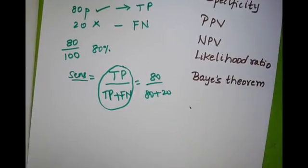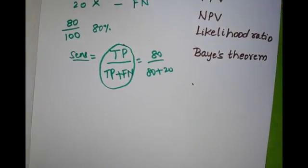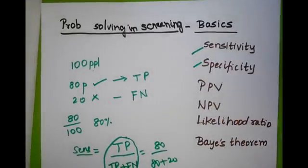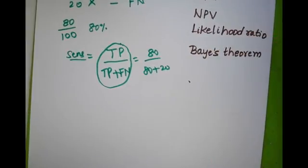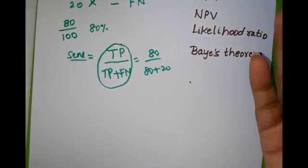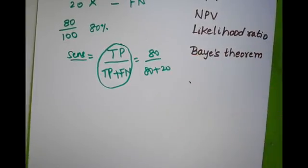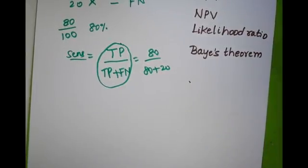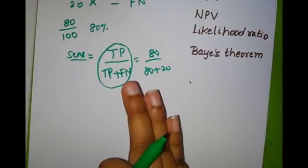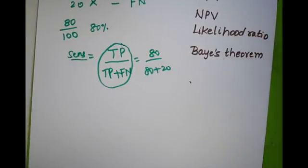Sensitivity and specificity are two fixed parameters for any test. They are not suddenly going to change when prevalence increases or when the diseased population increases or decreases. For example, if your sphygmomanometer can detect only 80 percent correctly, whether that region has fewer or more hypertensives, the sensitivity and specificity are going to remain the same.